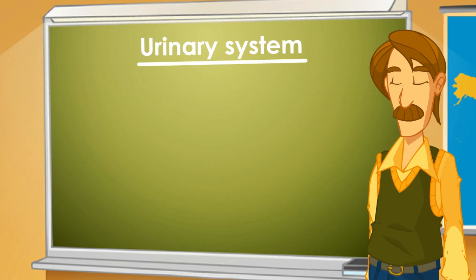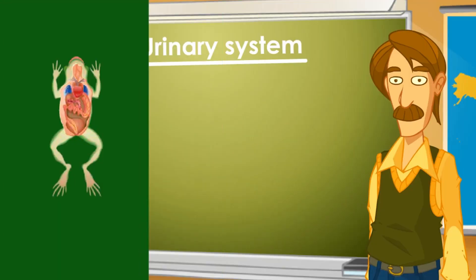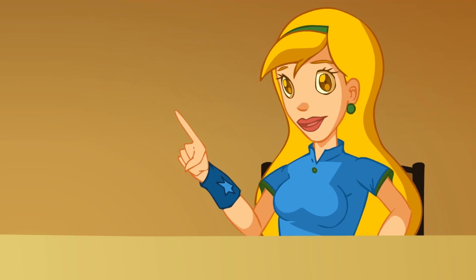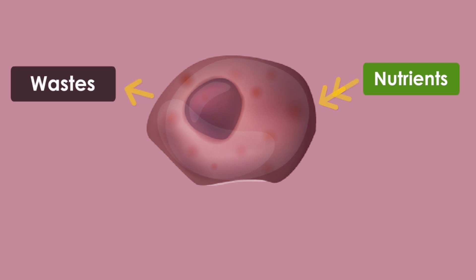There are several types of urinary systems, from very simple to very complex ones. However, in spite of the differences, we may find a function common to them all. What do they have in common? That cell metabolism, as cells are alive, requires nutrients and produces wastes which it needs to eliminate.